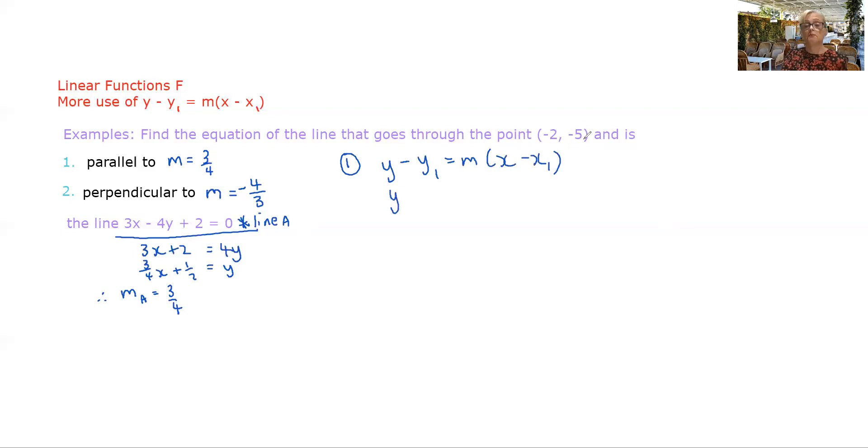So we have y minus negative 5, so y + 5 equals our gradient is 3/4, x minus negative 2 is x + 2. Now what I recommend in cases like this is that you multiply through by that denominator.